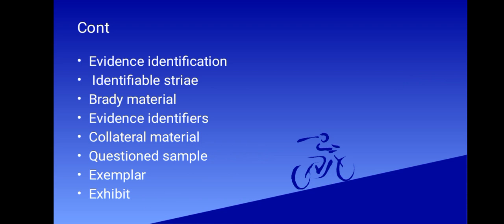We have identifiable striae. These are directions in the evidence mark that can be identified with reproduced situations in the test marks.